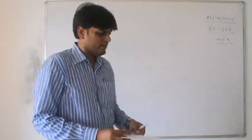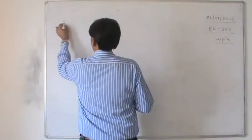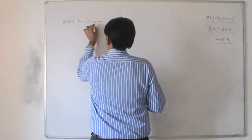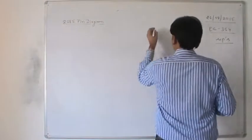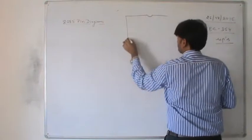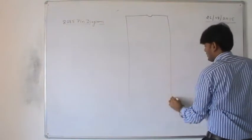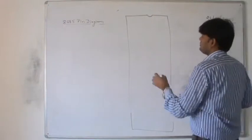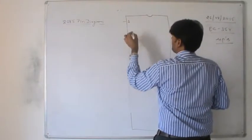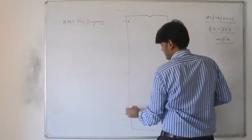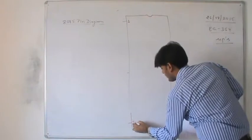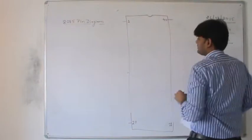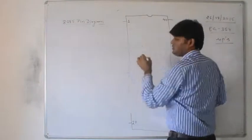So let us proceed further with the 8085 pin diagram. As 8085 is a 40 pin dual in-line package chip, we are going to start with pin number 1. So it has 20 pins on one side and pins 21 to 40 on the other side. Let me write down all the pin numbers first.